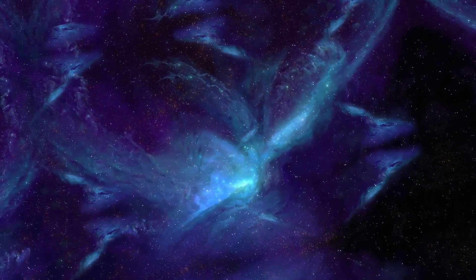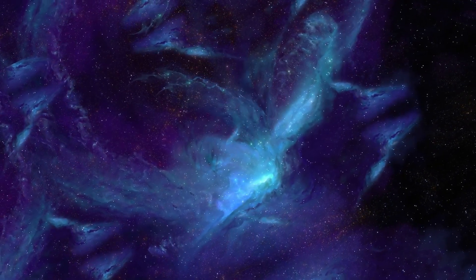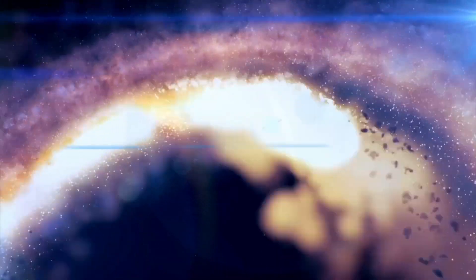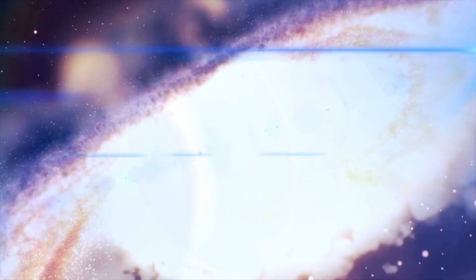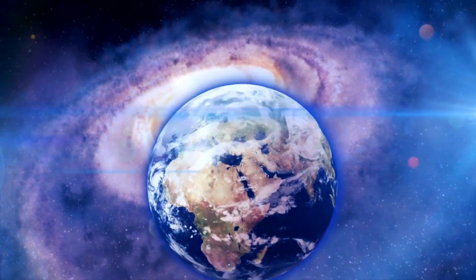Can you imagine a single star dwarfing our entire solar system? To provide some perspective on the sheer enormity of Betelgeuse, if it took the place of our sun, its edges would extend all the way to Jupiter. How can a single star achieve such colossal proportions?